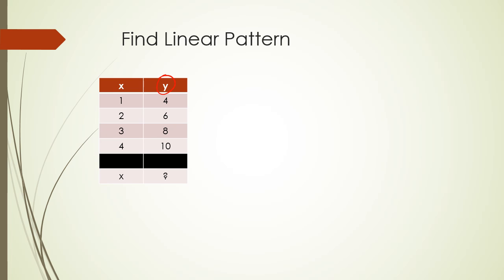Looking at this example, from 4 to 6 it's increasing by 2, then 6 to 8 is increasing by 2, and 8 to 10 is also increasing by 2. You may have heard that linear patterns or straight lines have the format y = mx + c. That little m basically represents that increase — it's 2 — because that's how much the values are going up by.